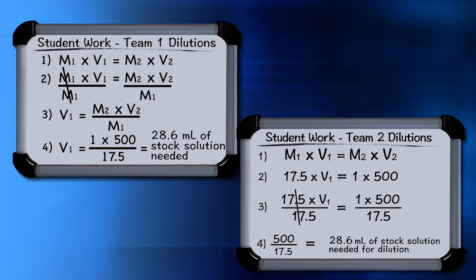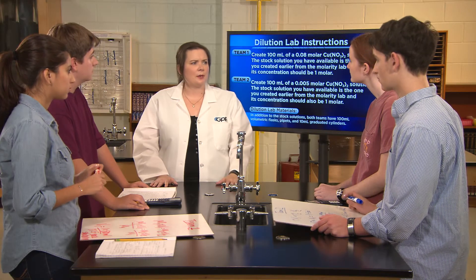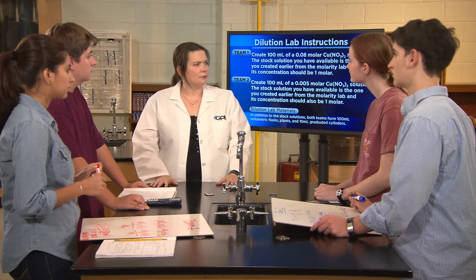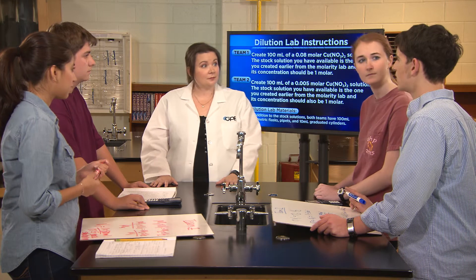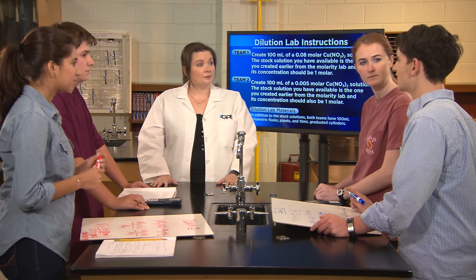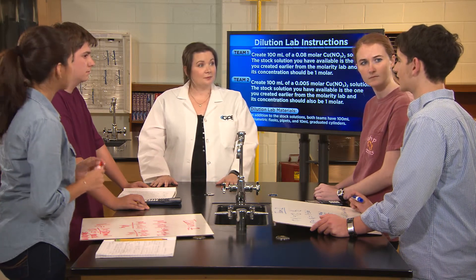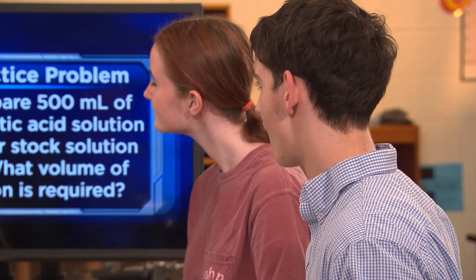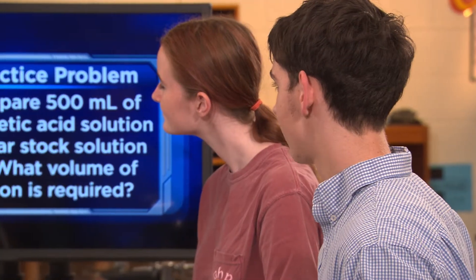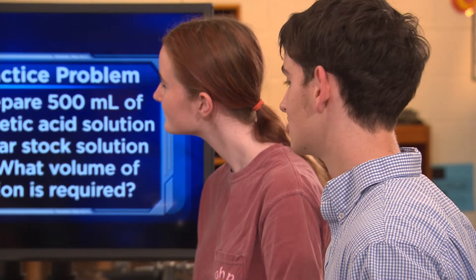But the final volume of the diluted solution should be 500 milliliters. What's making up the rest of the volume? Isn't it water? 471.4 milliliters of water, I think. Exactly right — since water is the solvent, it makes up the difference in volume. If there were a different solvent, it would make up the difference.